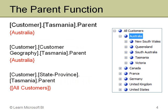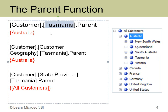The next example is the parent function. The parent is pretty simple — it is the parent of the current member. In this example I have customer.tasmania.parent. Tasmania is a state province of Australia, so when I ask for its parent it goes up one level and returns Australia. I've also shown it specified as customer.customergeography.tasmania.parent, which also gives Australia.